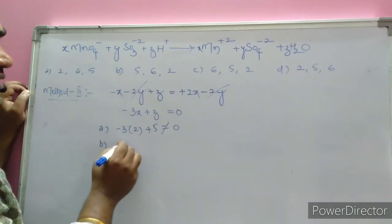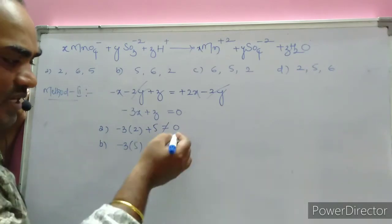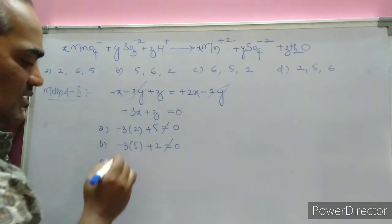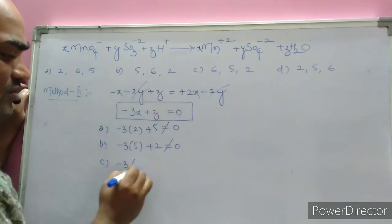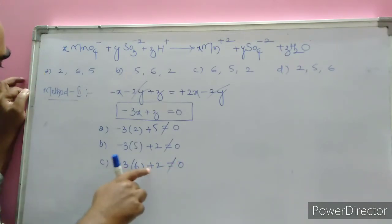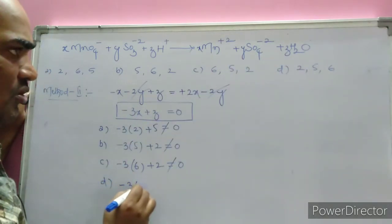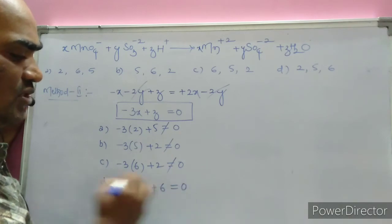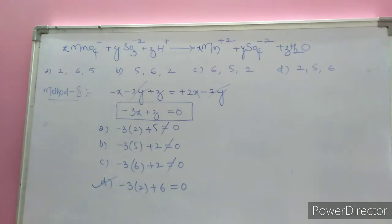Checking the third option: minus 3 times 6 plus 2 equals minus 18 plus 2 equals minus 16, also not zero. Checking option D: minus 3 times 2 plus 6 equals minus 6 plus 6 equals zero — correct! The right answer is option D. By using the x, y, z coefficient expression on the ionic equation, we can solve very easily.